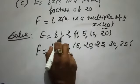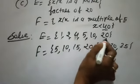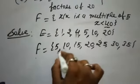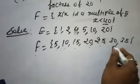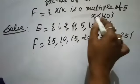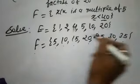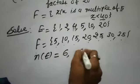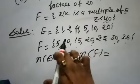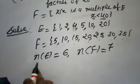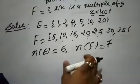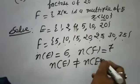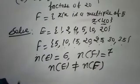The number of elements in set E is 6, and the number of elements in set F is 7 — 5, 10, 15, 20, 25, 30, 35. When we see the number of elements in set E and set F, they are not equal. So both the sets are not equivalent.